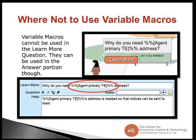Where not to use variable macros: variable macros cannot be used in the learn more question section. They can be used in the learn more answer portion though. This is the learn more question — if you put a variable macro in the learn more question, it will display the raw macro text, not the value of the variable — which is obviously not how you want it to display. So don't put variable macros in the learn more question section. It works perfectly fine in the learn more answer section. It's just a little A to J quirk and we're working on it.